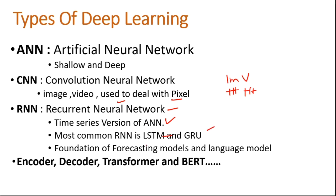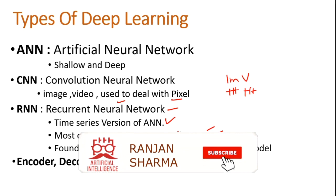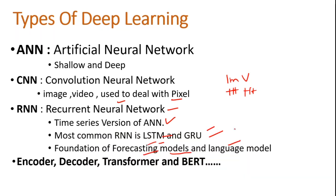The most common RNN variants are LSTM — Long Short-Term Memory — and GRU — Gated Recurrent Unit. We use RNN in forecasting models, weather forecasting, stock forecasting, language models, NLP, and natural language translation, because all of these involve time-series data. RNN has a special technique that allows us to choose how much past information we want to let flow through to the next layer — that's why it's called a memory network.